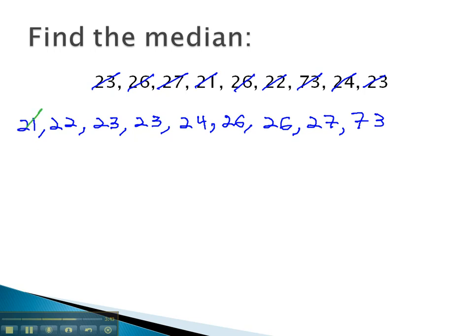And now if we want the median, we want the middle number, so we'll take 1 off of each end, do it again, take 1 off of each end, 1 off of each end, and 1 off of each end, and what we find is the median middle number here is 24. 24 is the median of this data.